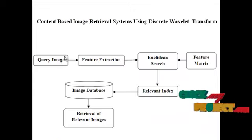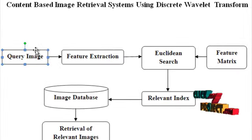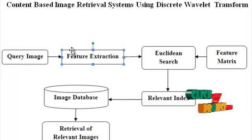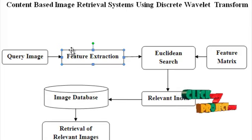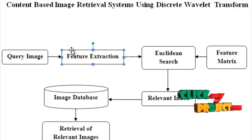Now I am going to explain the data flow diagram for our proposed implementation. The first block is selection of a query image, followed by feature extraction. The given query image is decomposed by discrete Wavelet Transform, from which we obtain the approximation and detail coefficients. The coefficients are extracted after applying various filters.